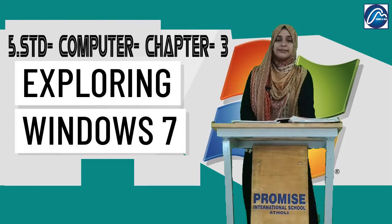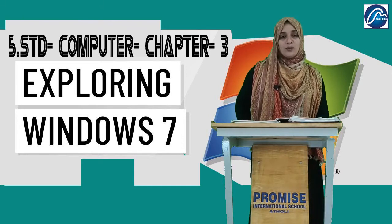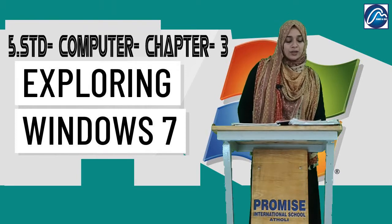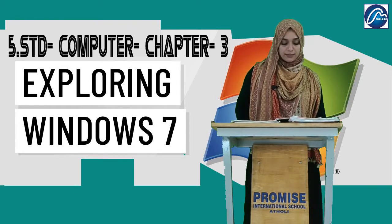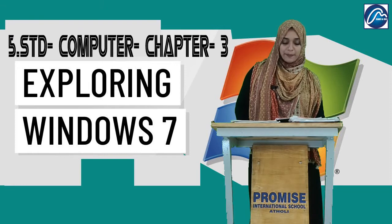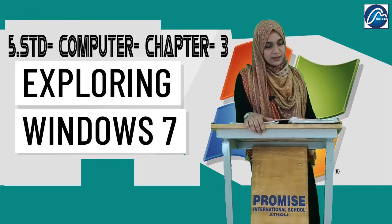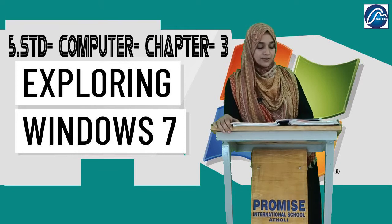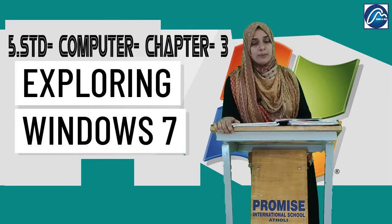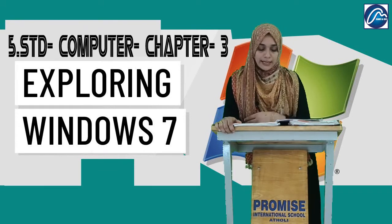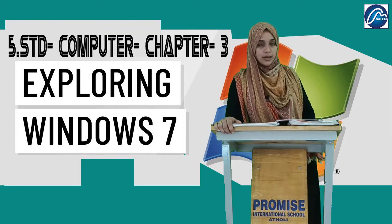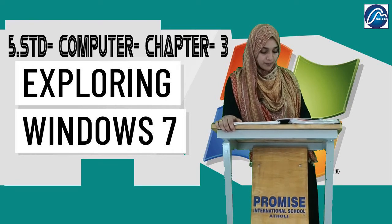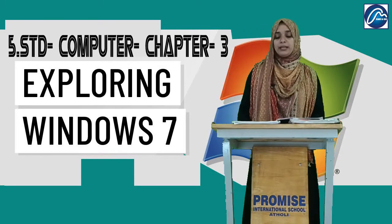Now let's see which things are present in the Windows Explorer window. The Windows Explorer window is divided into two columns or panes. The pane on the left is called the Navigation Pane, and it displays the available drives, folders, and sub-folders.